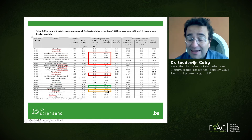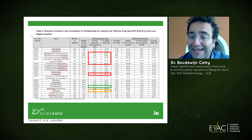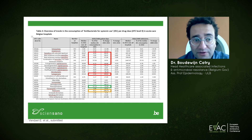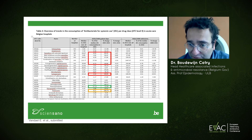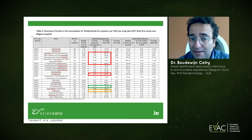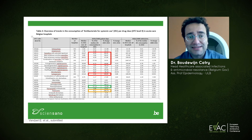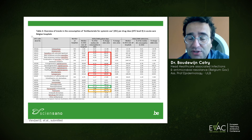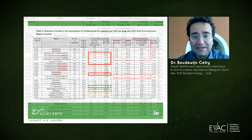Despite the fact that colistin is very important and still needed — particularly because of carbapenem resistance — the resistance level today is very beneficial in human medicine. It also means that many other agents currently entering human medicine will replace colistin, which I will show in a moment.